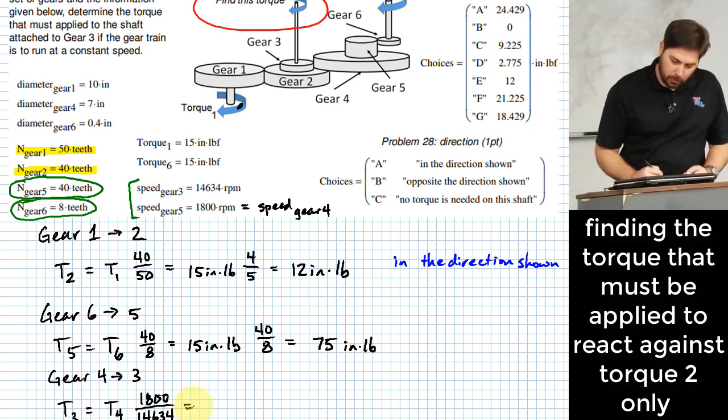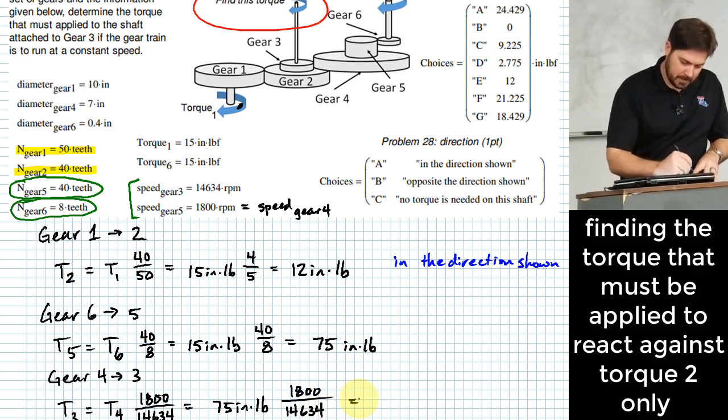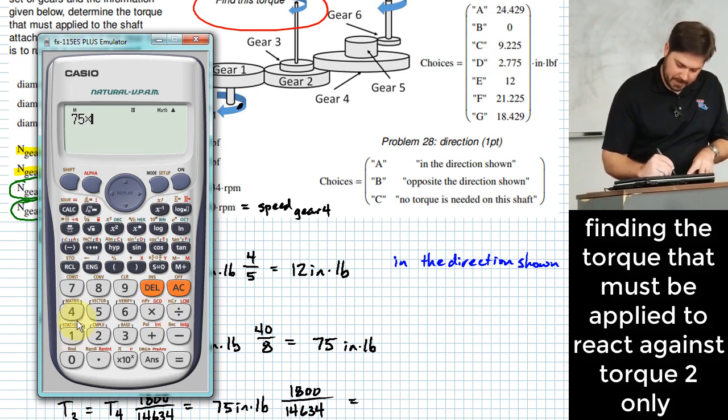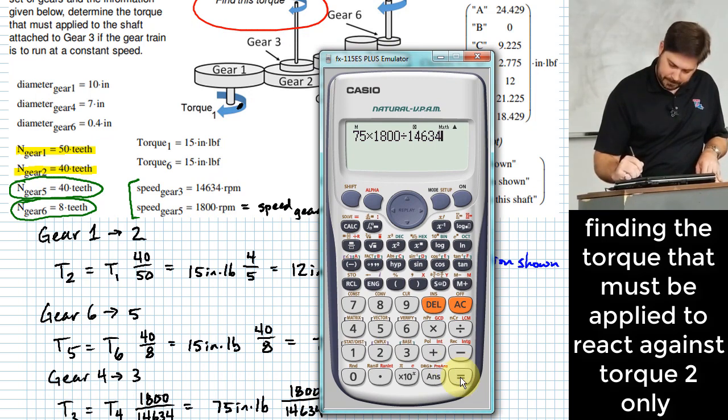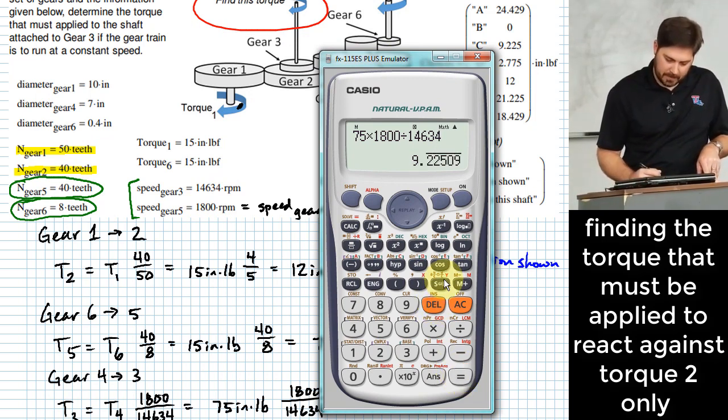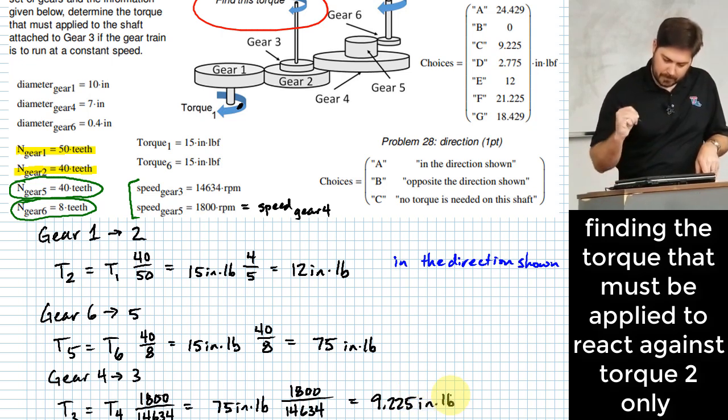Okay. The torque carried in gear four is the same as the torque carried in gear five, right? And so I'll put in 75 inch pounds times 1800 over 14,634. Okay. And then I'll calculate that. So 75 times 1800 divided by 14,634. Okay. That gives me 9.225 inch pounds.